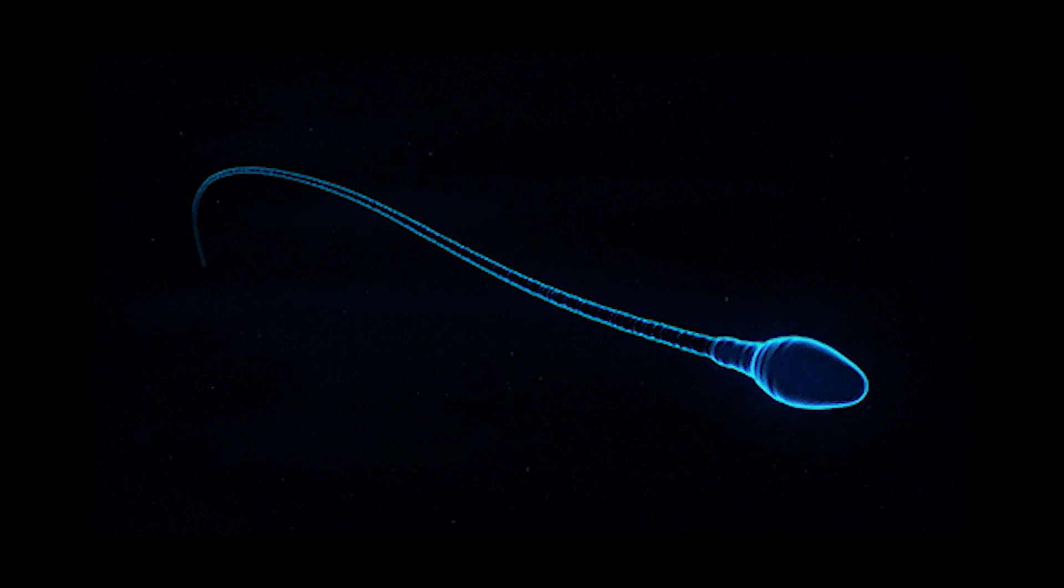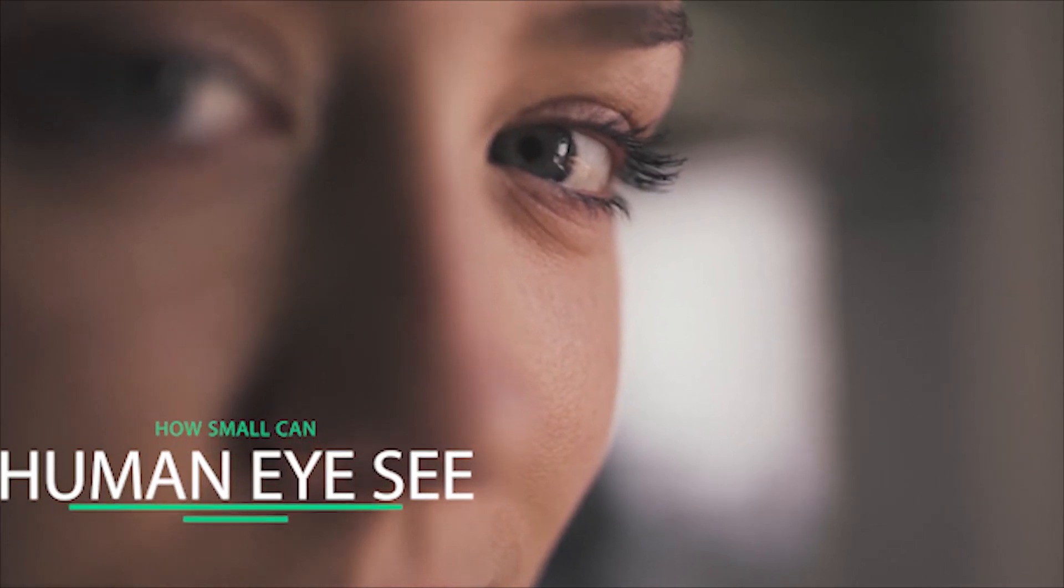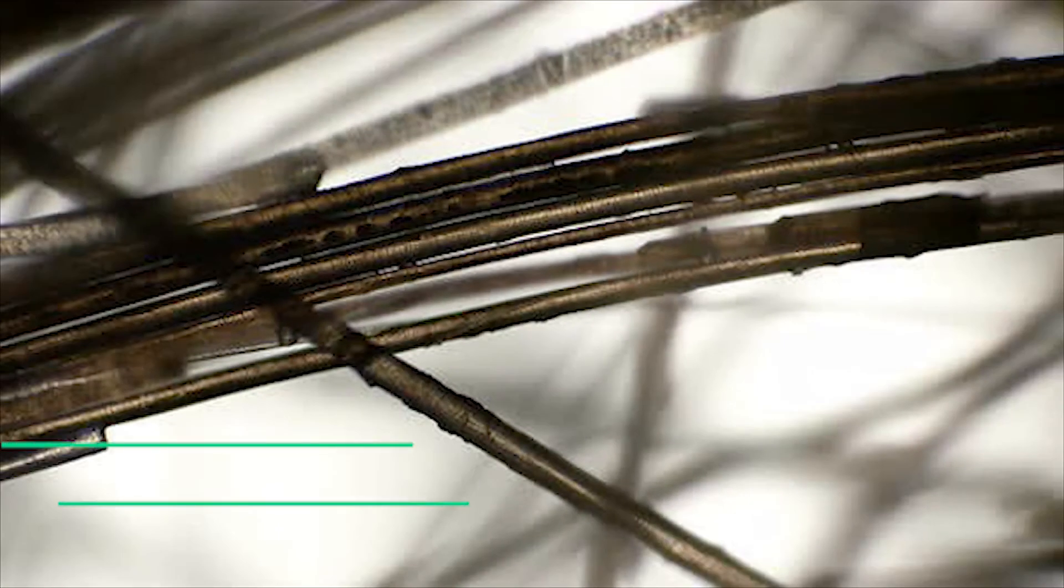So what is the smallest size that a human eye can see? The tiniest object that an unaided human eye can see is about 0.1 millimeter. It is about as thick as a single strand of human hair.